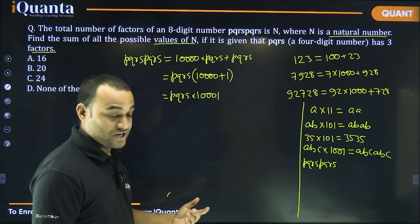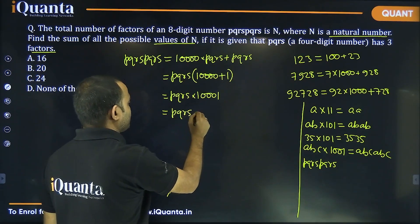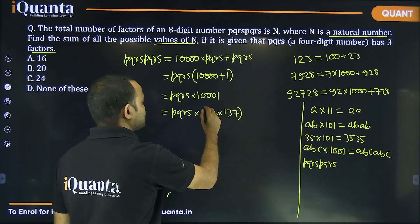Now, what is 10001? Again, it's a very popular number in terms of factorization. This can be written as 73 into 137.